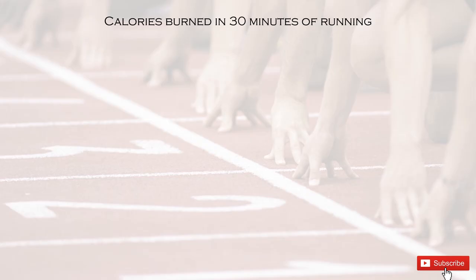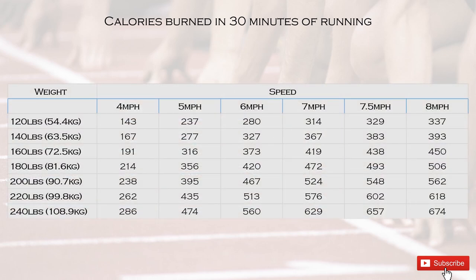Now, how many calories would you burn in 30 minutes of running? This table shows that depending on your speed, you'll burn a different amount of calories. The speeds covered are 4, 5, 6, 7, 7.5, and 8 miles per hour. Depending on your weight, you'll burn a certain amount of calories for 30 minutes at each speed.